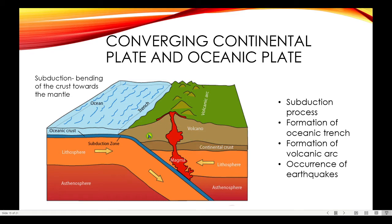The converging of continental plate and oceanic plate may result in the following: subduction process or the bending of the crust toward the mantle; the formation of the oceanic trench or the deepest part of the ocean; the formation of volcanic arc or the chain of volcanoes found on the continental crust; and the occurrence of earthquakes.